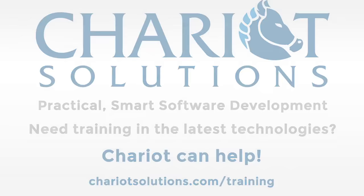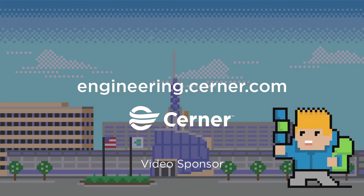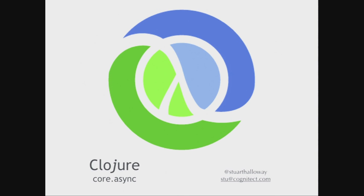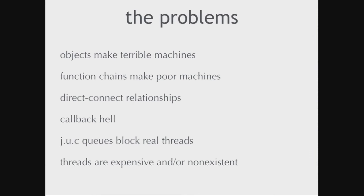I want to start with a problem statement. And like a lot of good problem statements, this is a problem statement that requires you to solve more than one problem at a time. One of the challenges in software development, especially when you're taking an incremental approach, is you don't necessarily get the entire surface area of the problem out in front of you. This is a danger, maybe particularly with Agile methods, because you bite off little bites, and then after a while you look back and go, a comprehensive approach to this would have come to a significantly different answer.